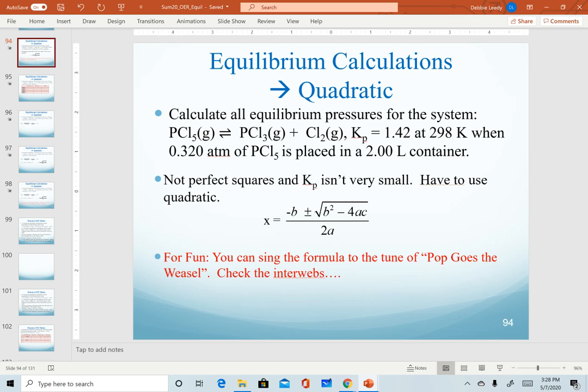Our last variation for ICE tables is the third way to solve for an x value, to solve for equilibrium values for substances. This is if neither one of the shortcuts that we've already presented works. If you don't have perfect squares or if you don't have a small K value, then that means we are going to be limited to using the quadratic.